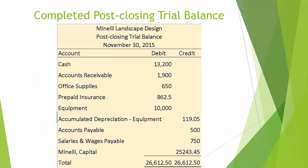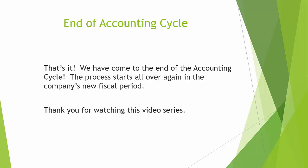Here is what the completed post-closing trial balance looks like. We have cash, accounts receivable, office supplies, prepaid insurance, equipment, and accumulated depreciation — all the asset and contra-asset accounts. We have two liability accounts: accounts payable and salaries and wages payable, and Minnelli Capital. Notice that on this post-closing trial balance, total debits equals total credits, so we know that the books are in balance. That's it — we have come to the end of the accounting cycle. The process starts all over again in the company's new fiscal period. Thank you for watching this video series.